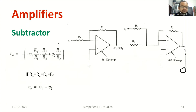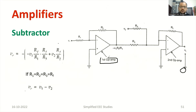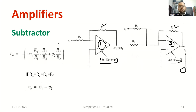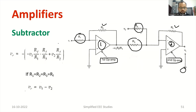Another important discussion: when does the op-amp act as a subtractor? Here we require two circuit stages. The first op-amp stage and the second op-amp stage. We have feedback resistor Rf for op-amp 1 and another Rf for op-amp 2. R1 is the input resistor of op-amp 1, and R3 and R2 are applicable for op-amp 2.